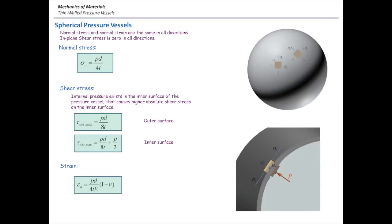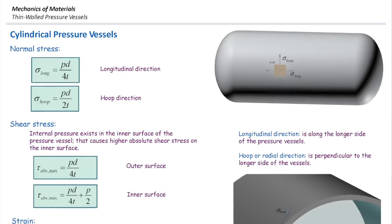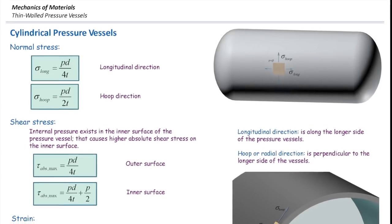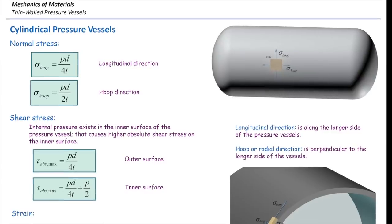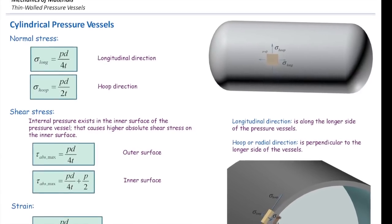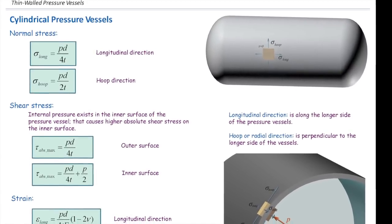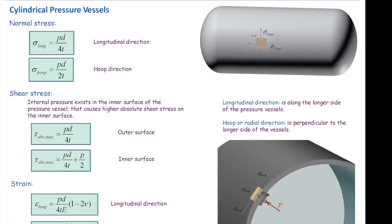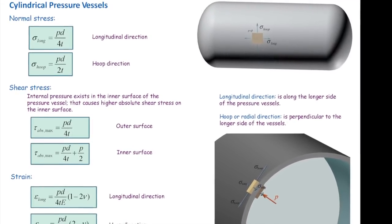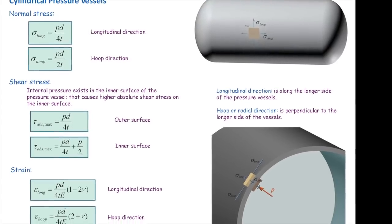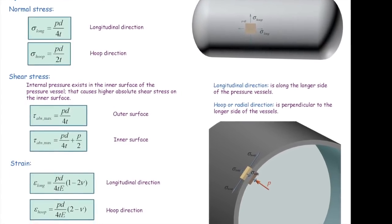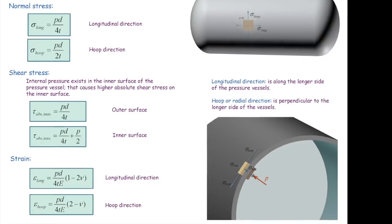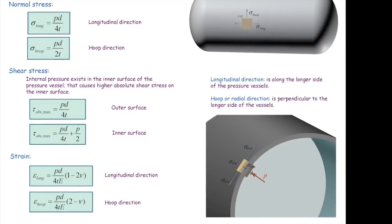In the previous lecture, we talked about spherical pressure vessels. Here, we want to talk about cylindrical pressure vessels. Similar to what we did before, we are going to talk about what types of stresses are expected to develop in cylindrical pressure vessels, how to calculate those stresses, the equations for determining maximum shear stresses, and strains in cylindrical pressure vessels.